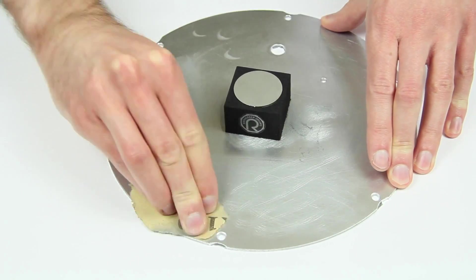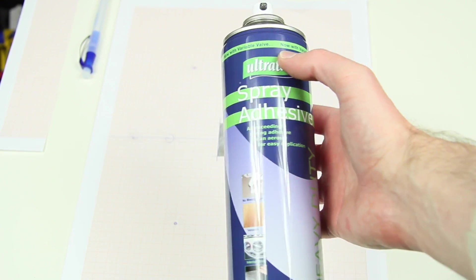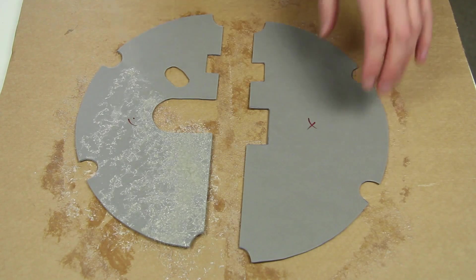Again, the surface needs to be sanded before gluing the rubber. Spray adhesive is the best choice to glue on every kind of material.